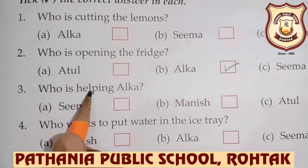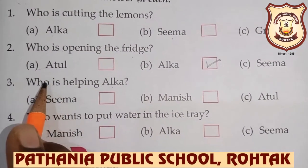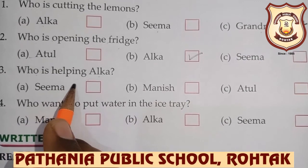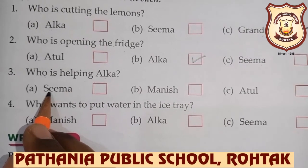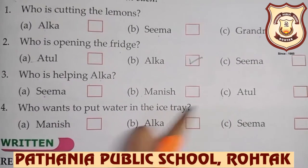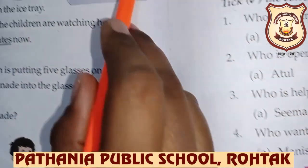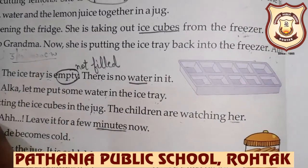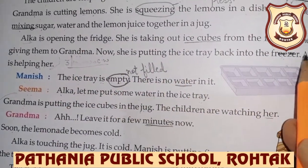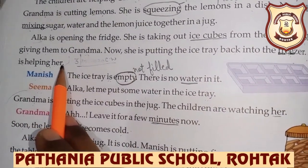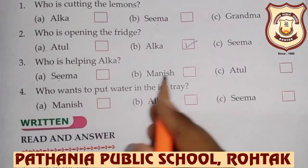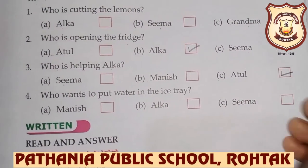Who is helping Alka? Alka ki help koon kar raha hai? A. Sima, B. Manish, C. Atul. Answer is C — Atul is helping her. Alka is opening the fridge and Atul is helping her. So who is helping Alka? Atul. Right?